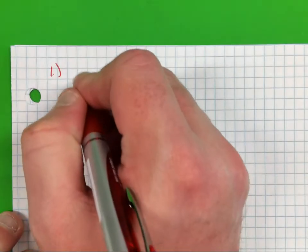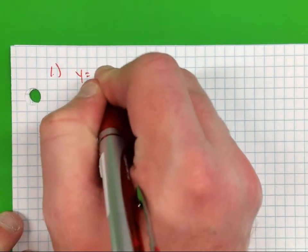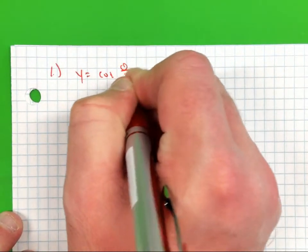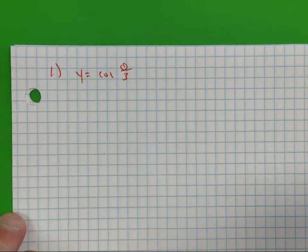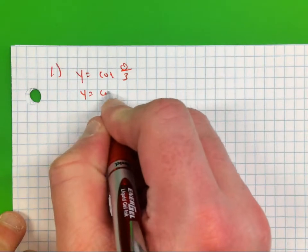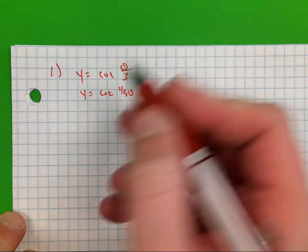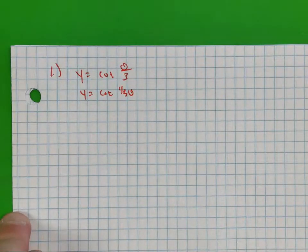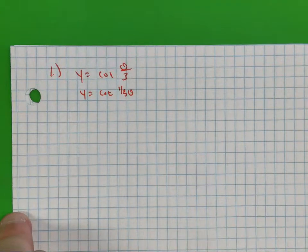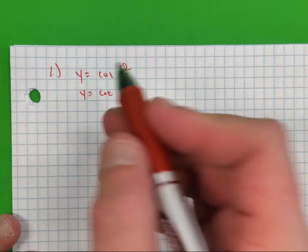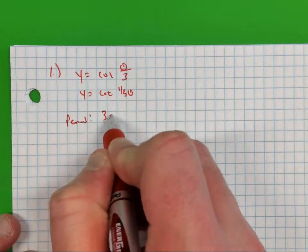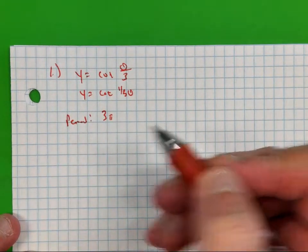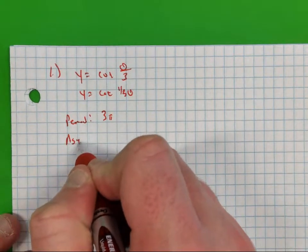Number one: y equals cotangent of one-third theta. My period — what's your formula for finding a period of cotangent? Pi over b. So pi divided by one-third would be three pi. Period is three pi.